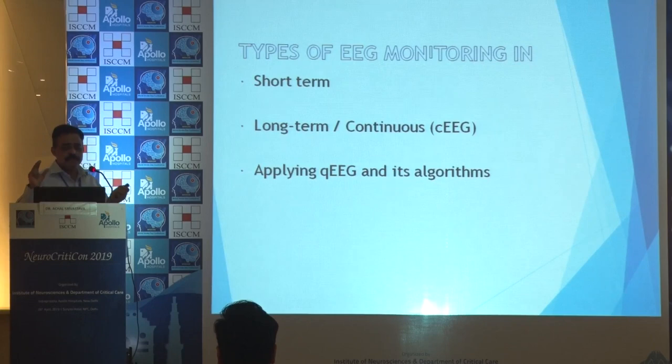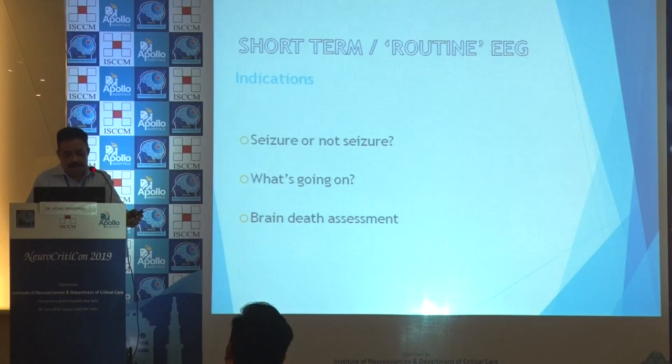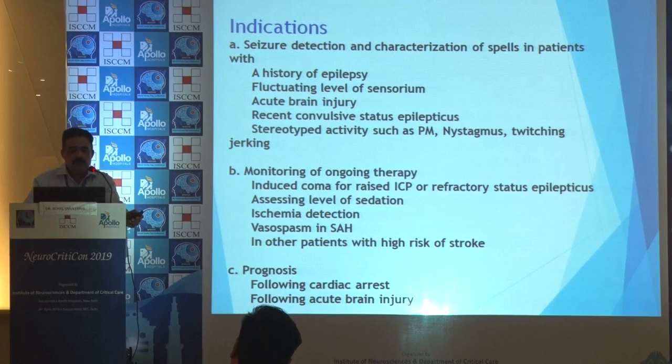There are various methods by which you can monitor. You can monitor the patient for a short time — maybe half an hour or two hours — or you can put the patient continuously on monitoring. Short or routine EEG means half an hour to two hours of data, which may be used just to determine seizure or no seizure, or to know what is going on. It may also be used for brain death assessment.